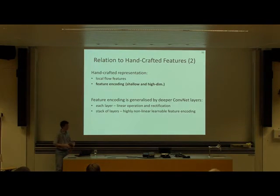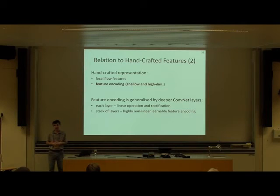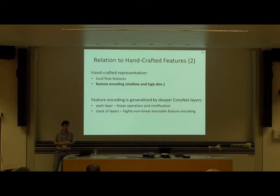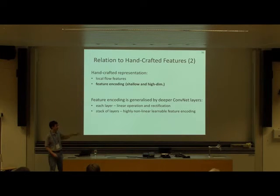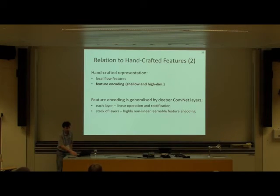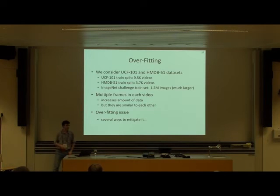Low-level features are only part of the story. In a shallow architecture you have low-level features and an encoding step, whereas convolutional networks perform a very discriminative deep transformation of the features computed by the first layers, because each layer performs linear operations followed by non-linearities. As I mentioned before, if there's not enough training data, there's an overfitting issue.